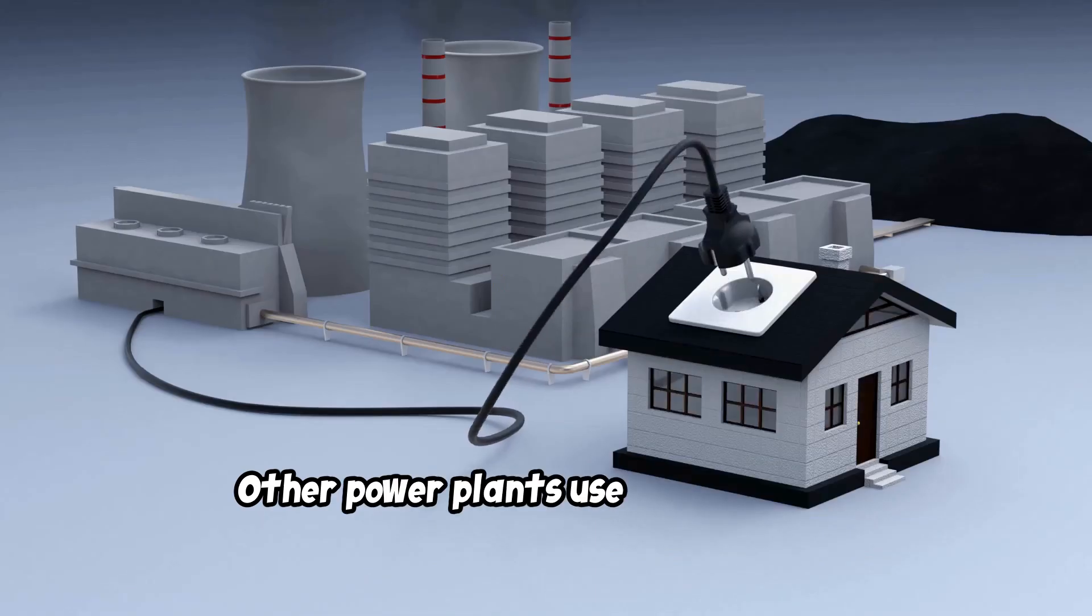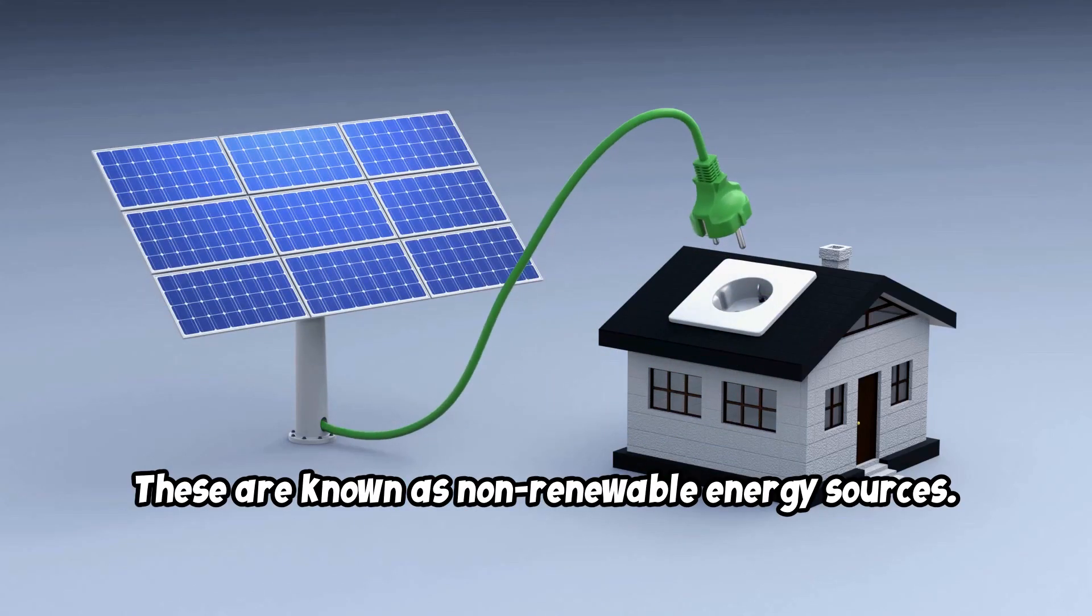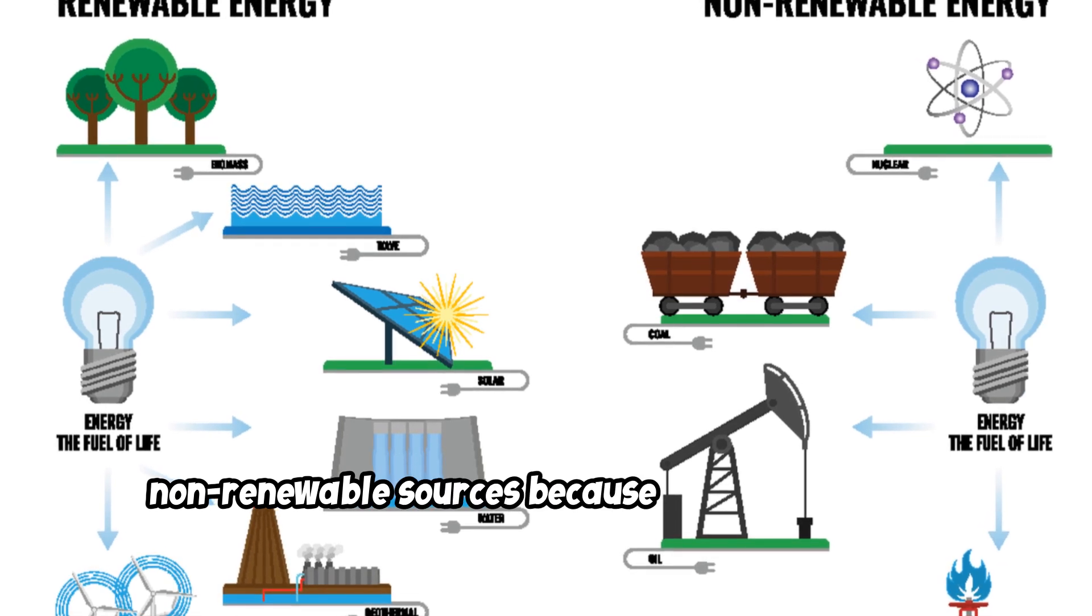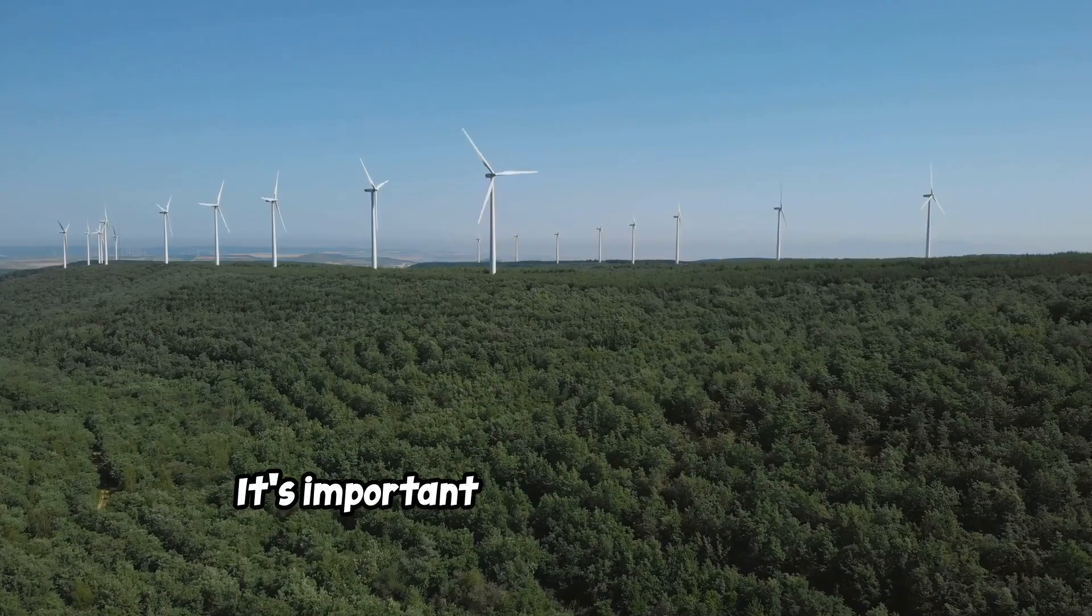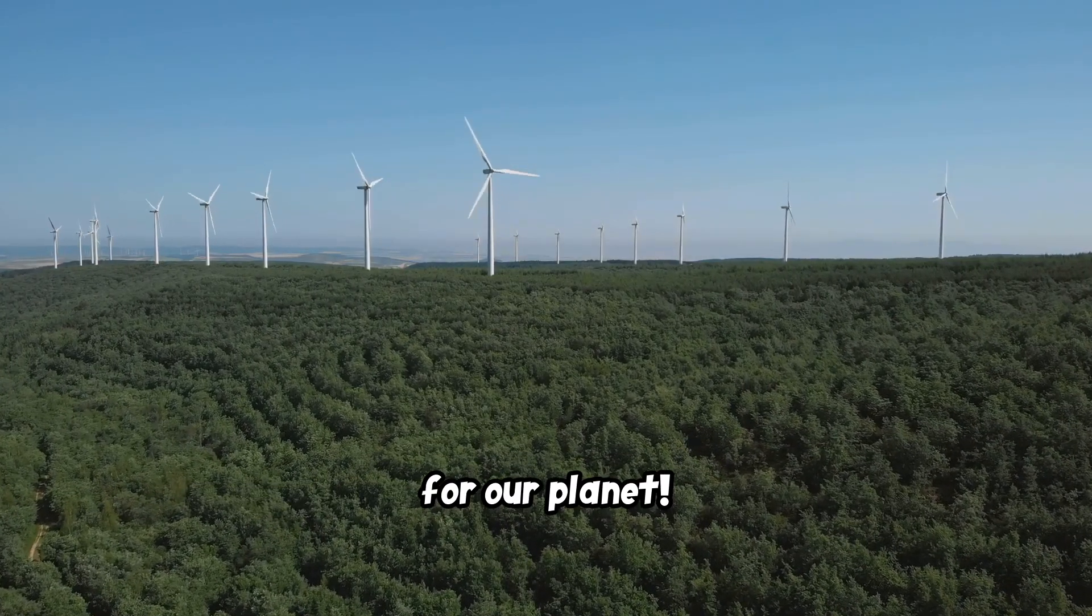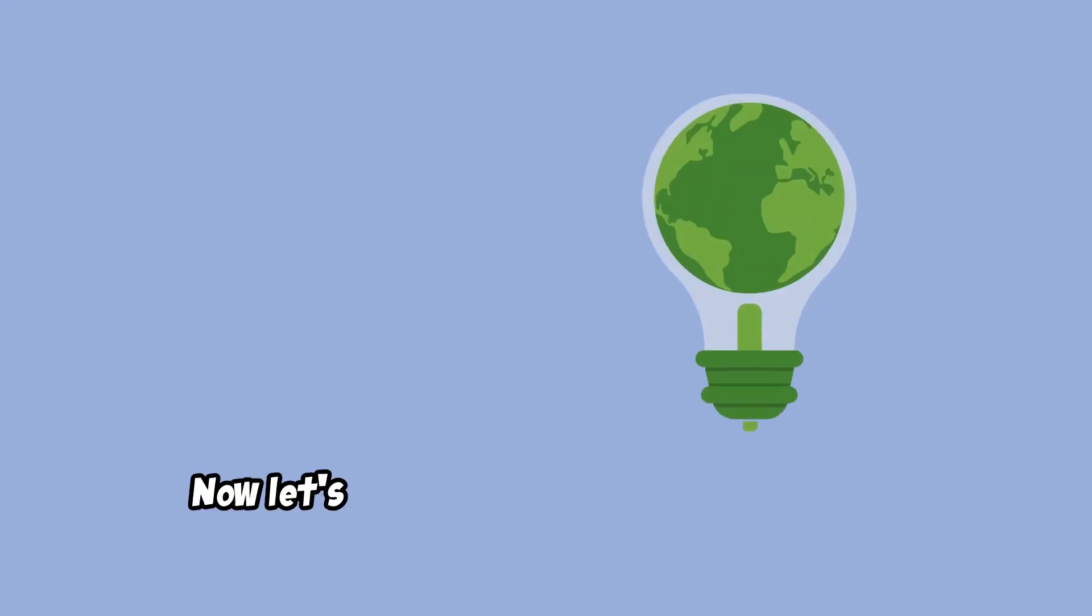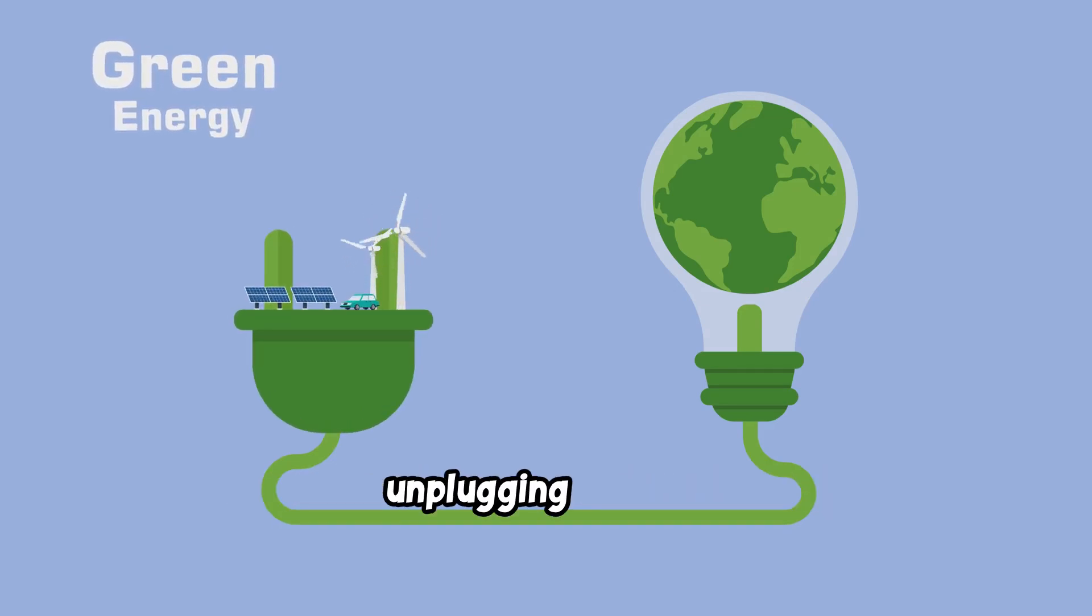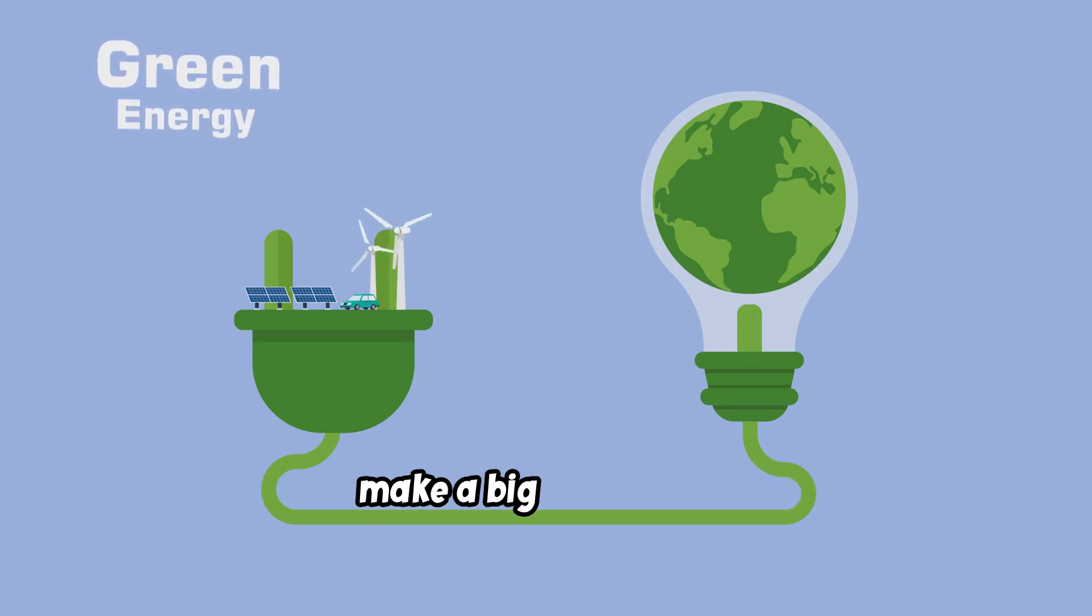Other power plants use coal or gas to make electricity. These are known as non-renewable energy sources. These sources of energy are called non-renewable sources because they can run out. Once we use them up, they're gone forever. It's important to use more renewable sources of energy because they are better for our planet. They help us fight climate change and protect our environment. Now let's learn how we can save electricity. Simple actions like turning off lights, unplugging devices, and using energy efficient appliances can make a big difference.